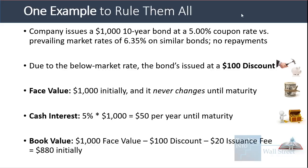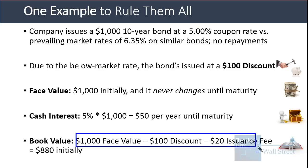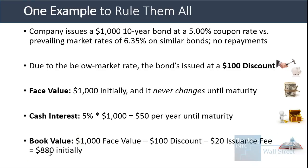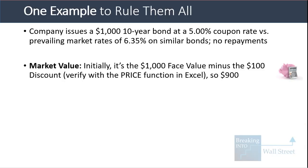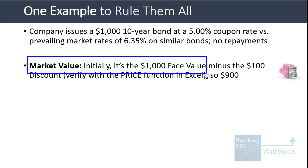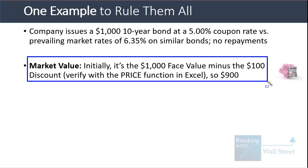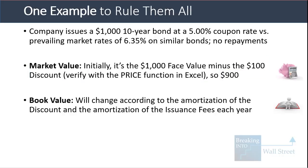The book value shown on the balance sheet is different. We take the face value, subtract the $100 initial discount, and subtract the issuance fee — 2% of $1,000 equals $20 — giving an initial book value of $880. The market value initially is $900, reflecting the discount but not the issuance fees. You can use the PRICE function in Excel to verify this.